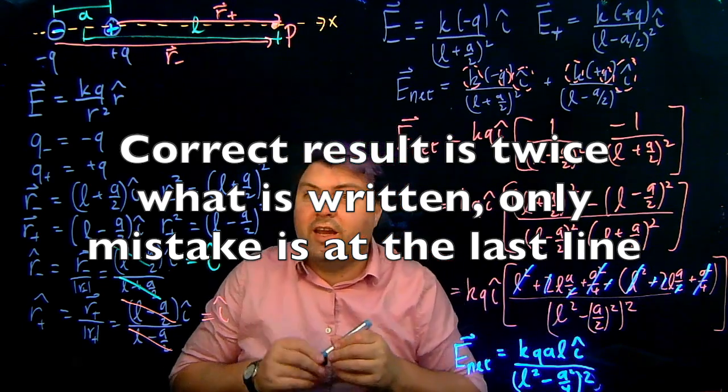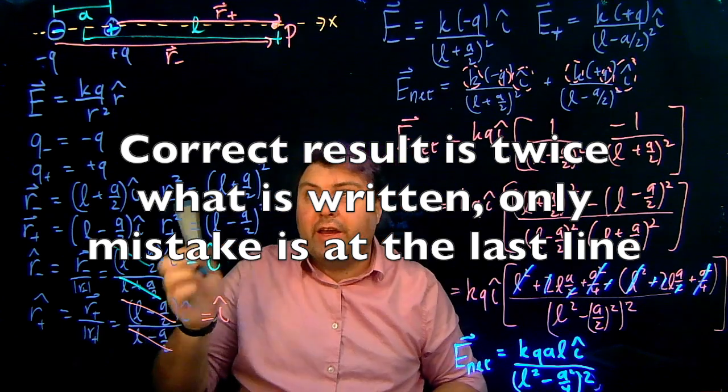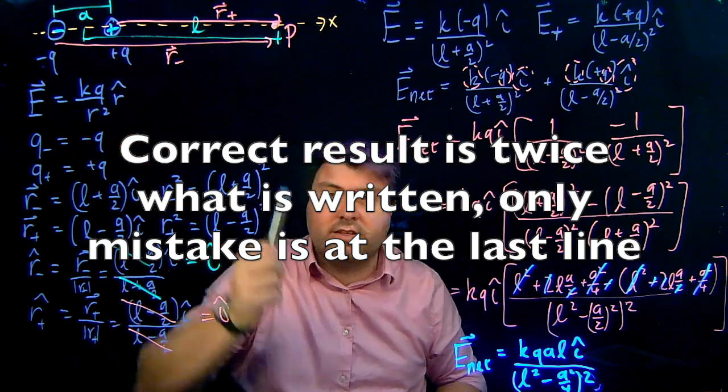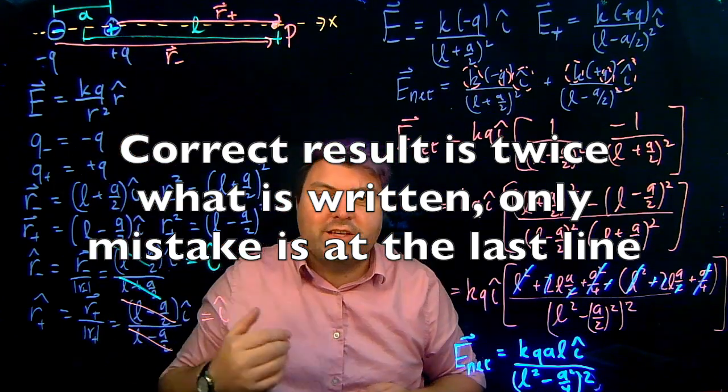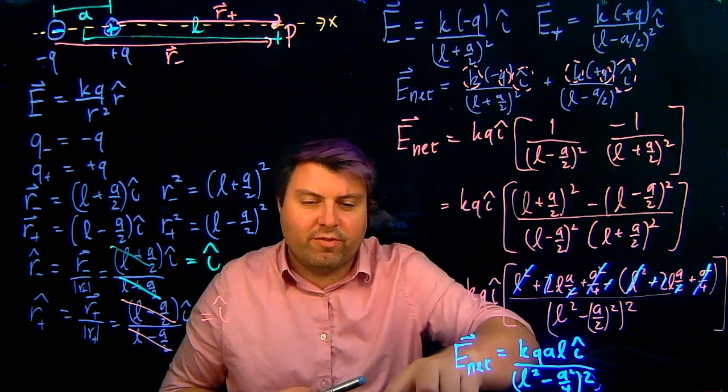So you might be saying, hey, this looks like a dipole. It could look like a dipole. It could be that A is on the same scale as L. We'll see in another lecture what happens if it is a dipole. Thanks.